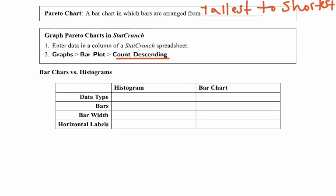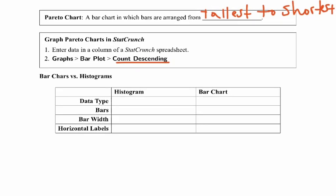Let's do a quick comparison here for histograms compared to bar charts. Histograms, the data type, remember, has to be numerical. For bar charts, we use that with data that is categorical. The bars with a histogram should touch. However, with a bar chart, the bars do not touch.